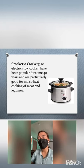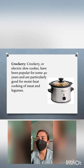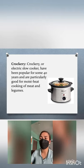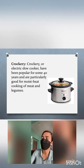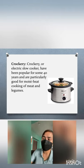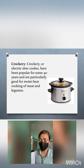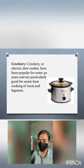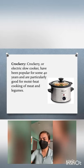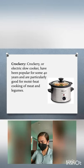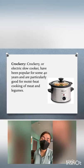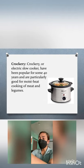Next, we have the crockery — a slow electric cooker that has been very popular for 40 years. It is particularly good for moist heat cooking of meat and legumes, such as beans, green peas, peanuts, and black beans.